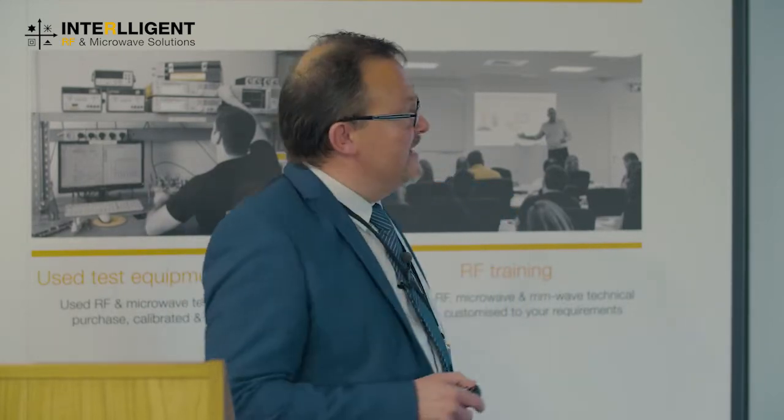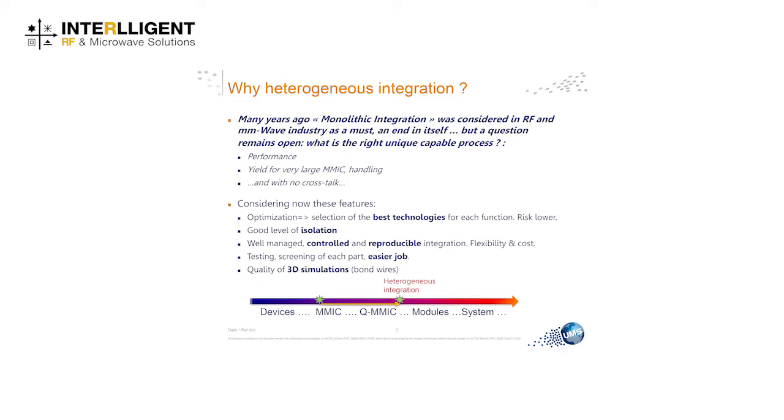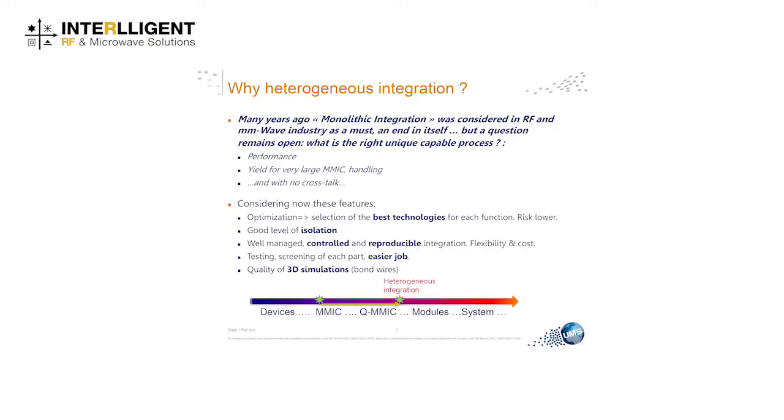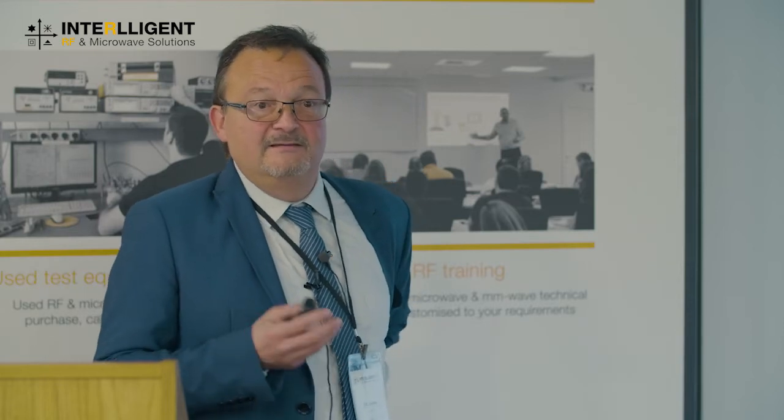So what is heterogeneous integration? Many years ago, monolithic integration was a kind of a grail — a must, something like an end in itself. But with the question of what is really the unique capable process, how to find a process able to provide performances and good yield for very large MMICs — because monolithic integration means a very big MMIC — which is an issue for handling, stock management, and so on.